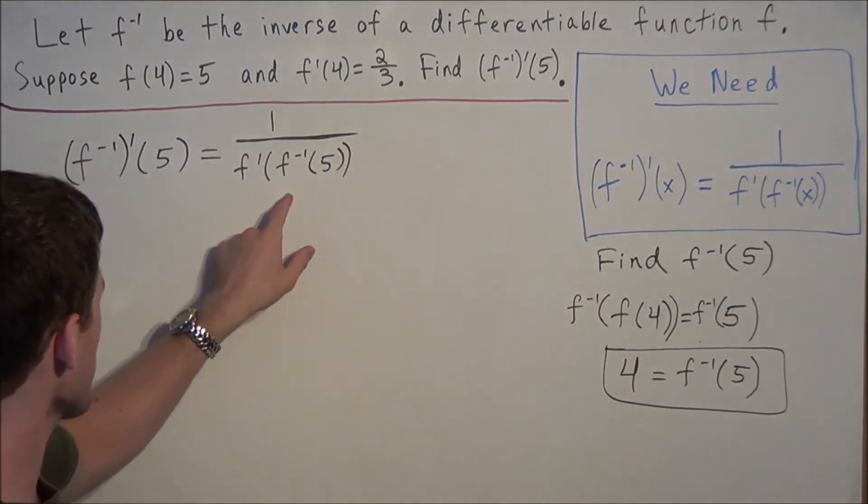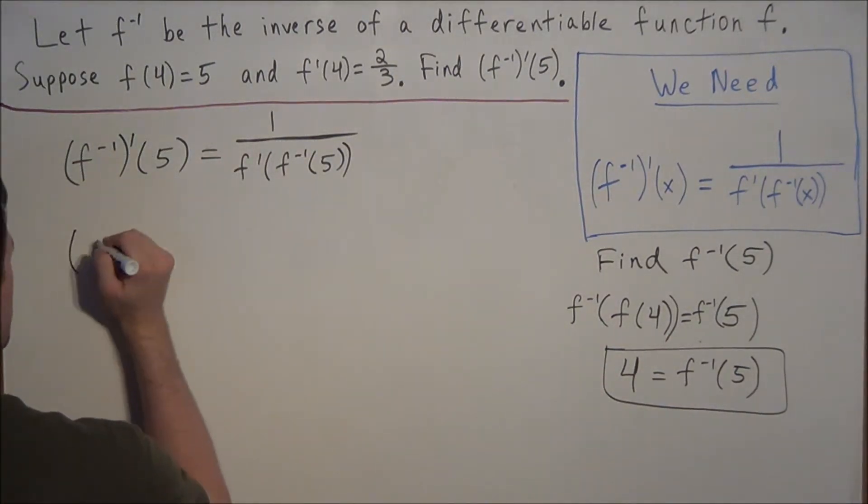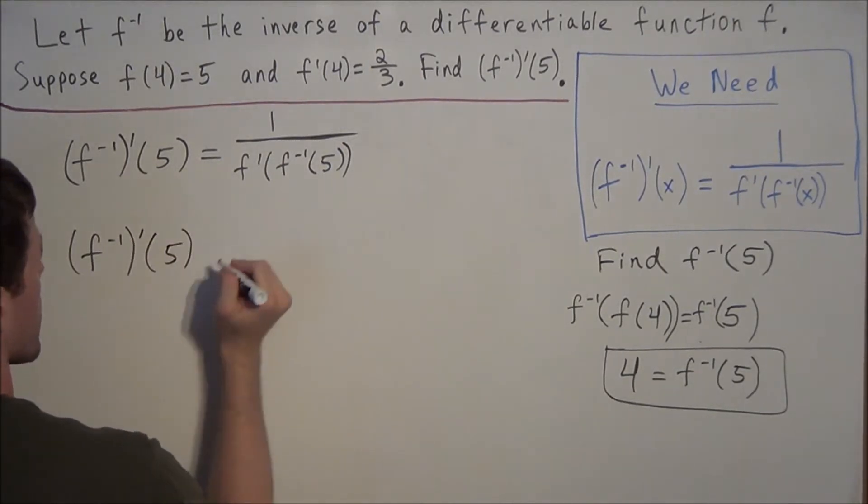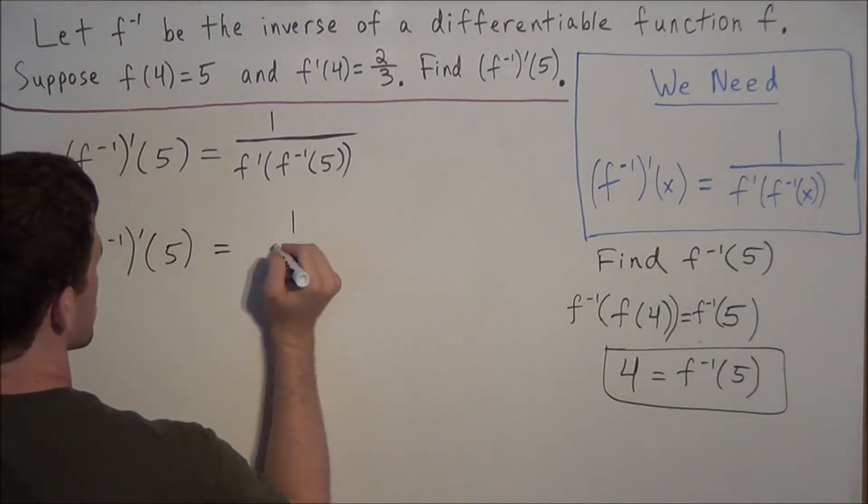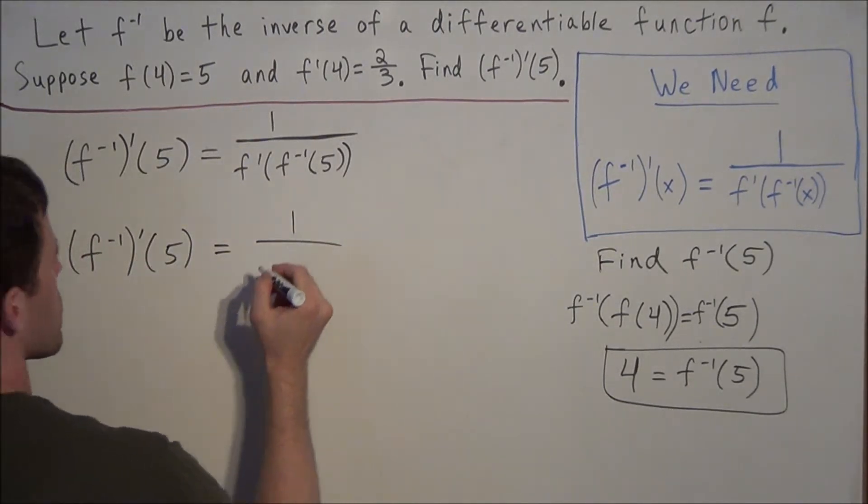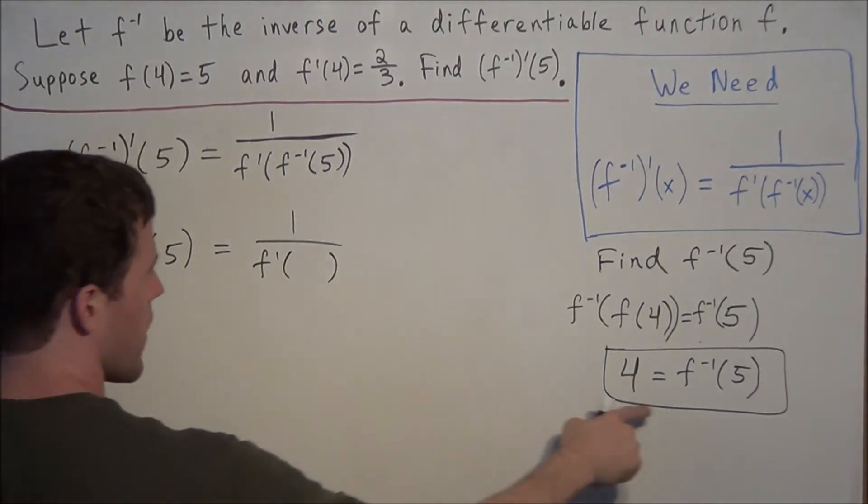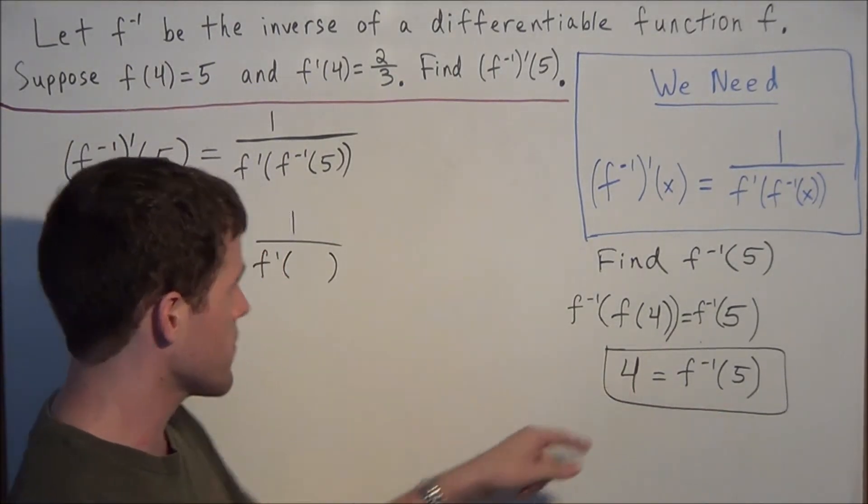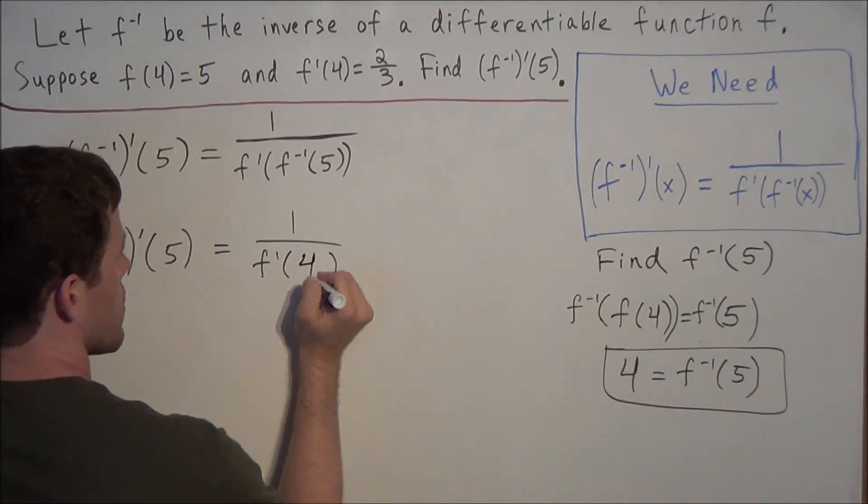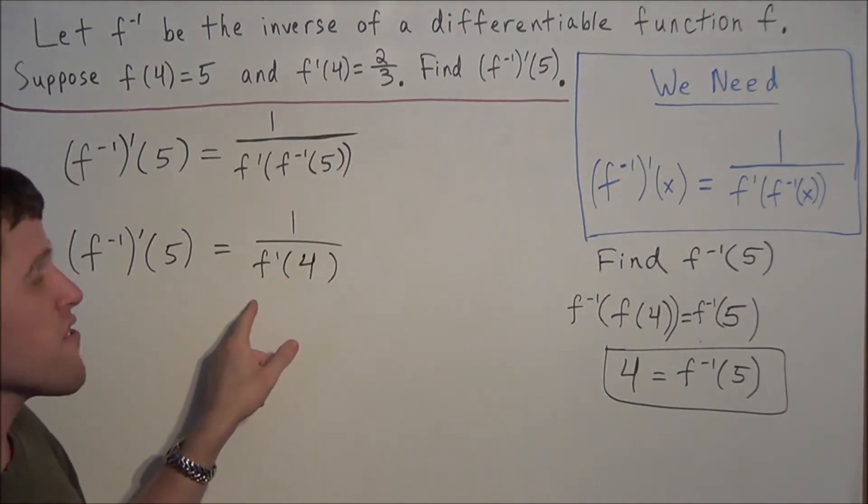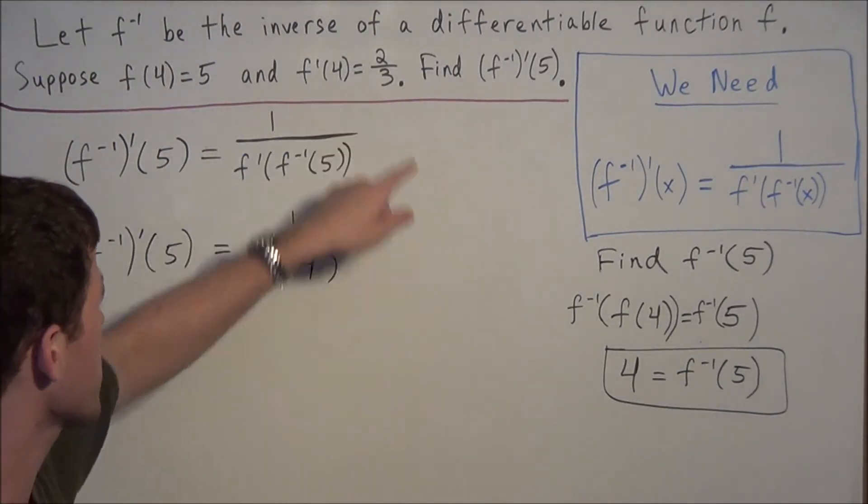So now we think about what we have here. We're trying to find the derivative of the inverse, evaluating it at 5. Now we can simplify: it equals 1 over f prime, and instead of f inverse of 5, we know f inverse of 5 equals 4. So now all we need to find is 1 over f prime of 4, and f prime of 4 was given to us in the beginning of the problem.